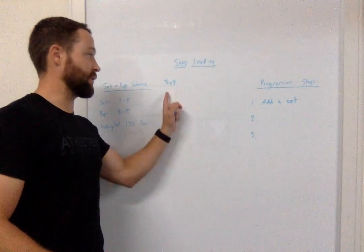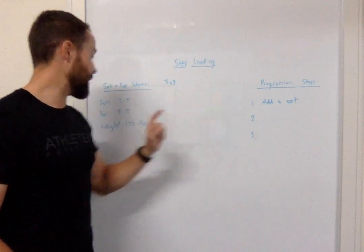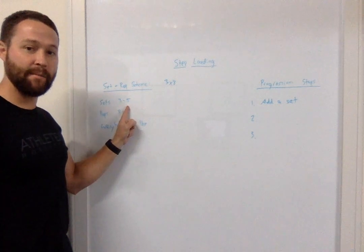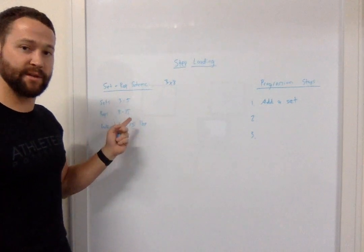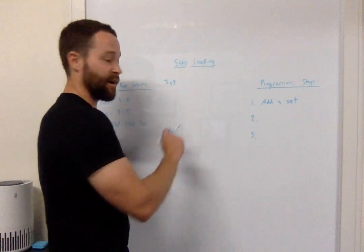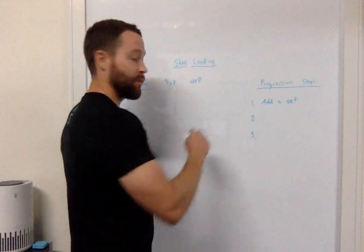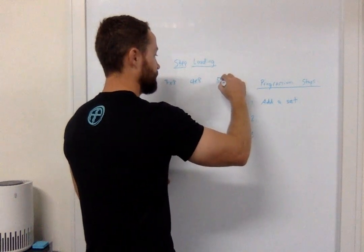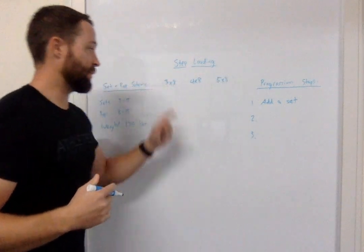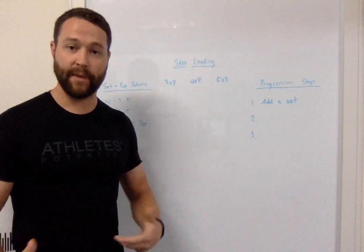Now we keep following this trend of adding a set to make it harder until we get all the way up to the top rep set scheme here of sets which would be five in this case. So tracking along here this would be three sets of eight. When I'm ready to progress that this would go to four sets of eight and then it would go to five sets of eight. Now we've significantly increased the amount of volume that we've done here which is great. That's getting us stronger.